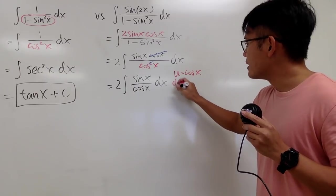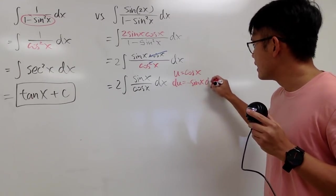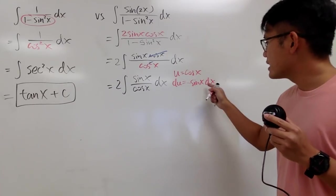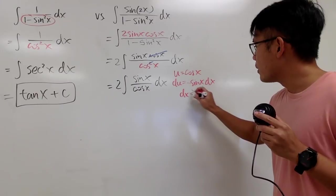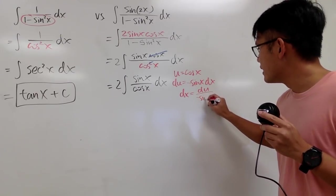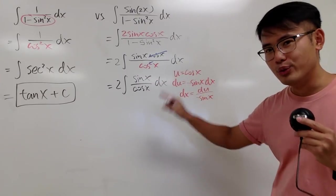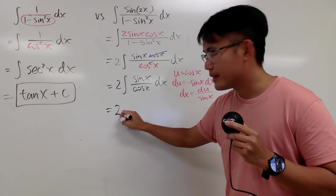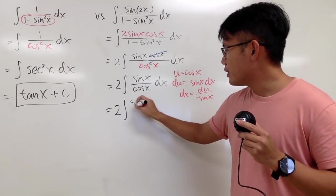So that I get du equal to negative sine x, dx. And I can solve for dx by dividing both sides: dx equals du over negative sine x. And I will take this integral to the u-world — I get 2, and sine x is still on the top.